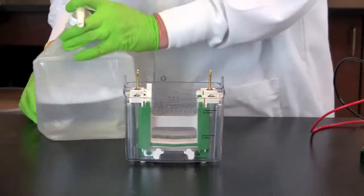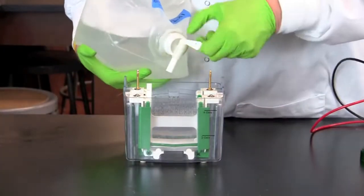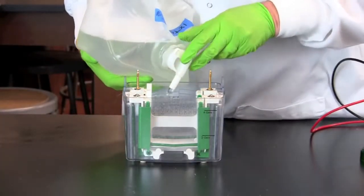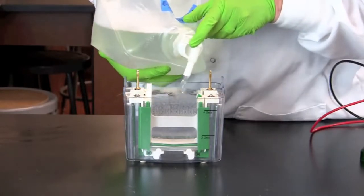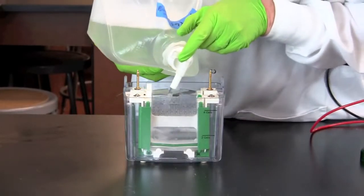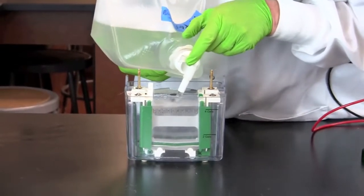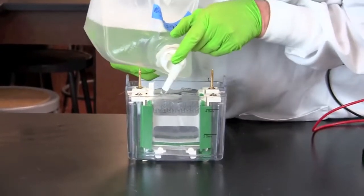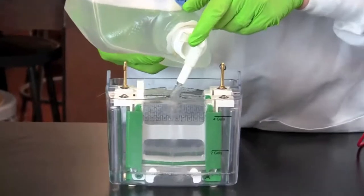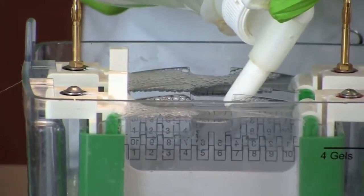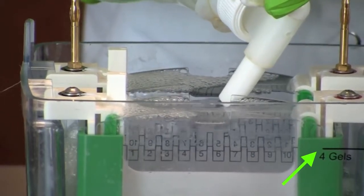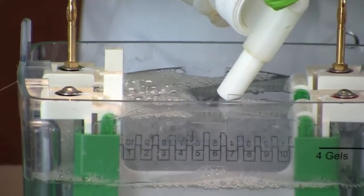Fill the chamber of the electrode assembly with 1X TGS electrophoresis buffer so the short plates of the gel are covered. Add buffer to the outer tank up to the four gels line. The gels are now ready to load.